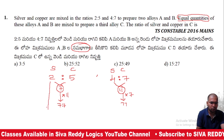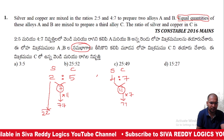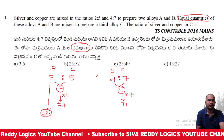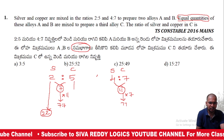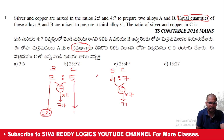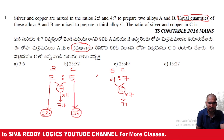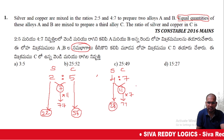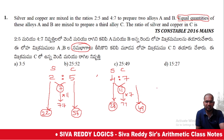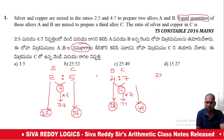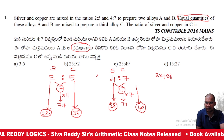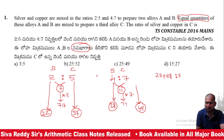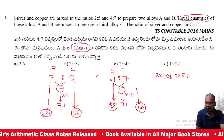In the first container (alloy A): silver is 2 parts × 11 = 22, copper is 5 parts × 11 = 55. In the second container (alloy B): silver is 4 parts × 7 = 28, copper is 7 parts × 7 = 49.